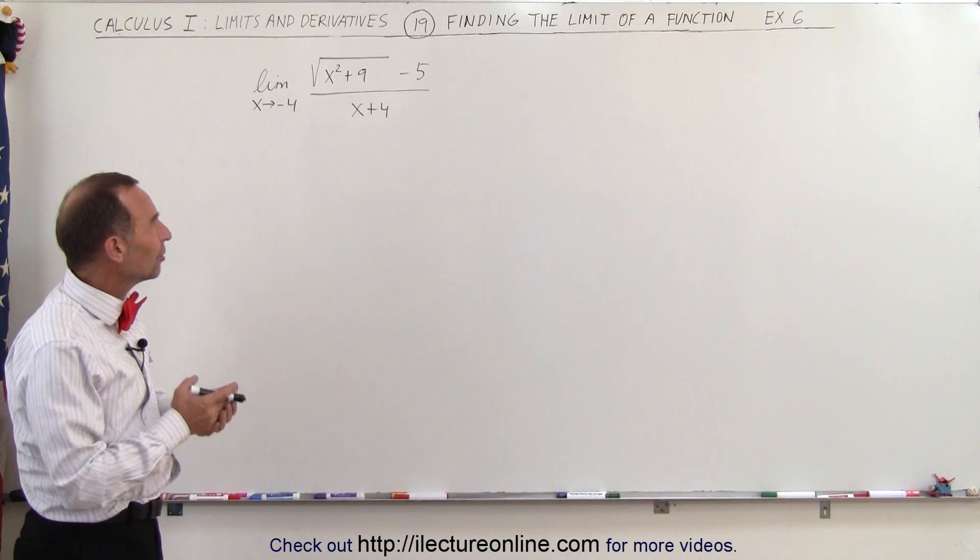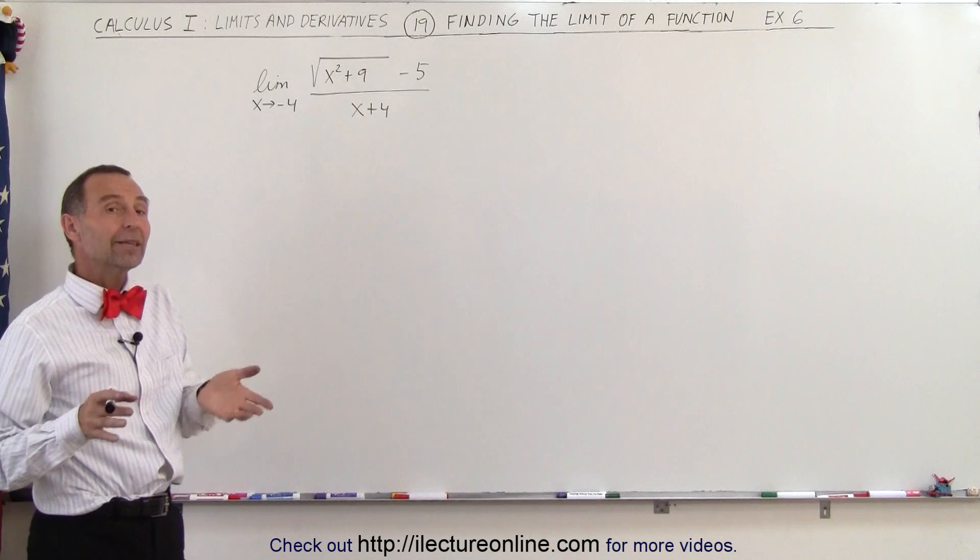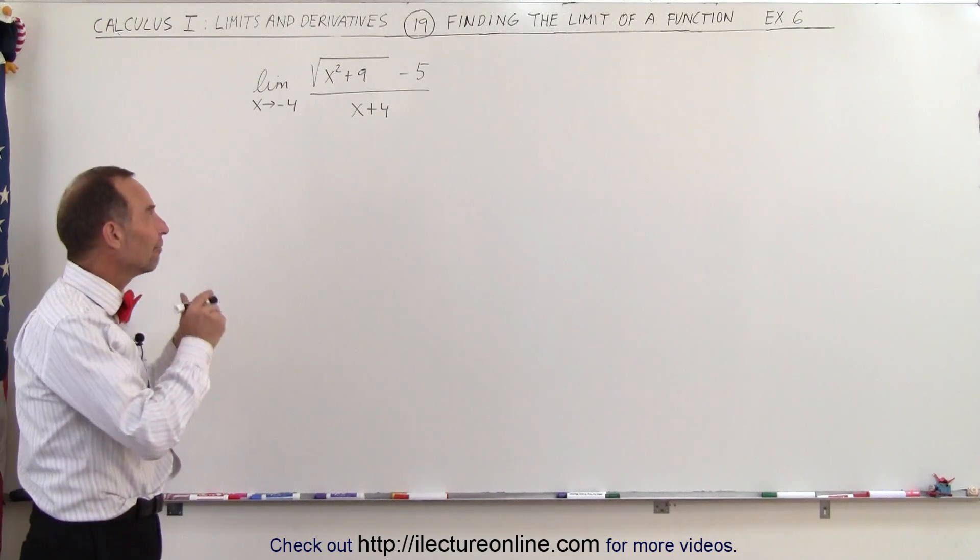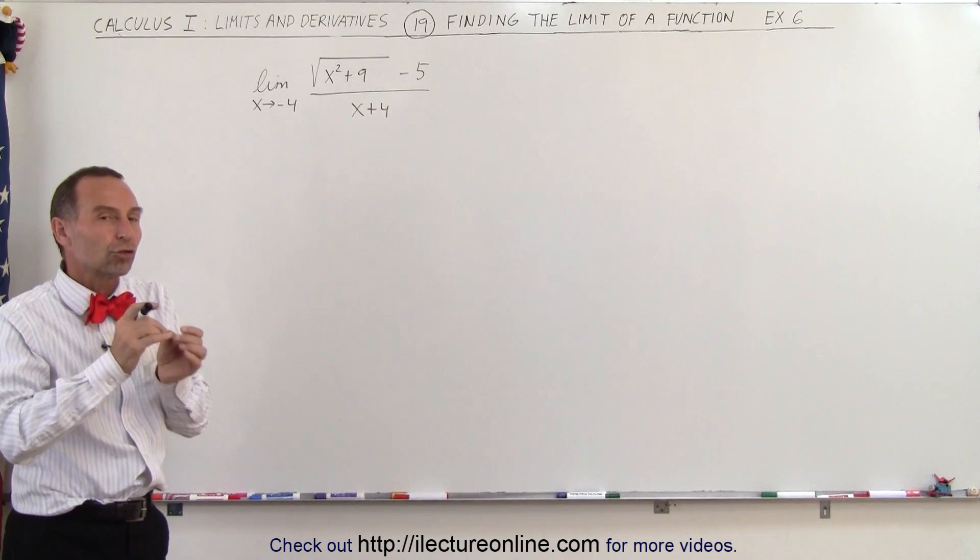Also, you look at that and you realize there's no factoring, no simplification, so in this case, I think the only method is to go ahead and find the value of the function as you let x approach negative 4 slowly.